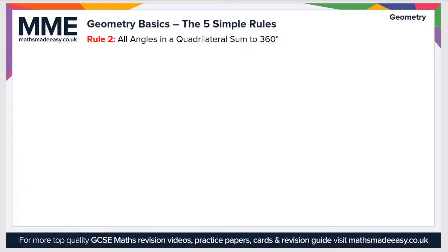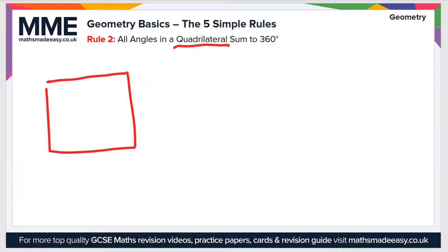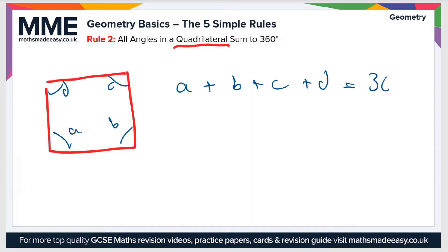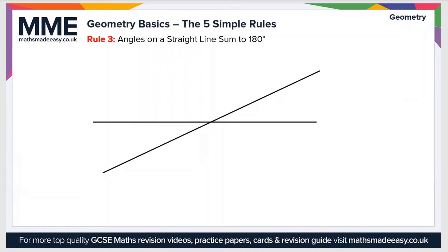Moving on to rule number two: all angles in a quadrilateral sum to 360 degrees. A quadrilateral is just a four-sided shape — here I'm going to draw a square. If we put the angles in and call them a, b, c and d, we can say that a plus b plus c plus d equals 360 degrees, and that is the case for any quadrilateral.